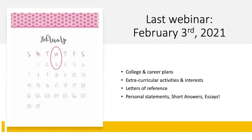Just a quick reminder — we have our final webinar on February 3rd, 2021, which will be a Wednesday at 5:30 PM, just like this one. We will cover the college and career plans section of your scholarship applications. We will talk about your extracurricular activities and interests and why they matter. We will cover letters of reference and show you examples of two good letters of reference and which one we would rather you submit. And we will cover personal statements, short answers, and essays, and how to fill those sections out.